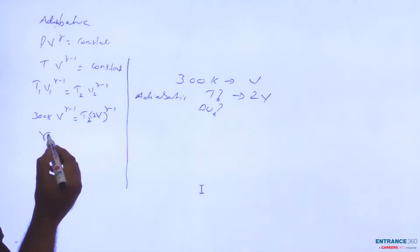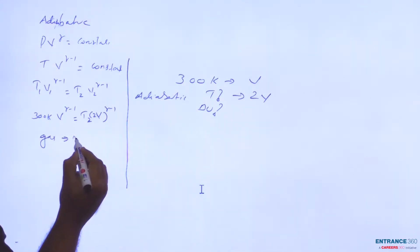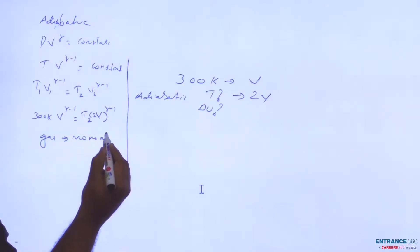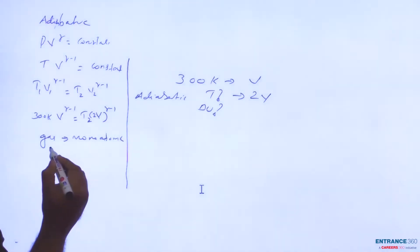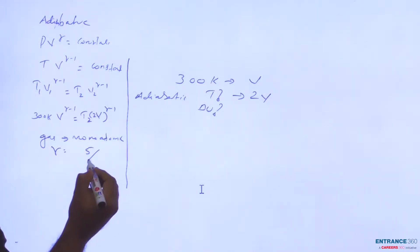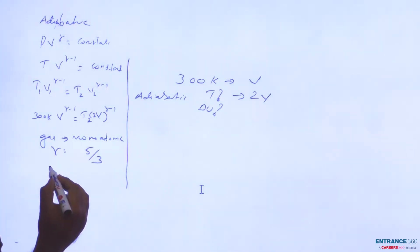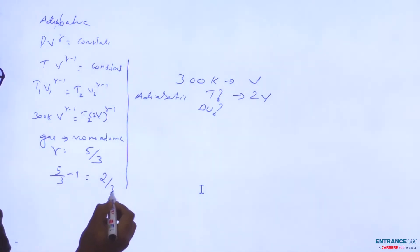For a monoatomic gas, γ equals 5/3, so γ minus 1 will be 5/3 minus 1 equals 2/3.